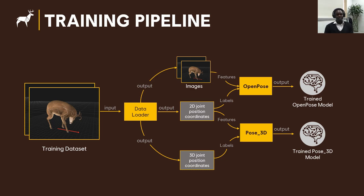Because OpenPose operates only on single images, it does not take into account the temporal information or features that might be present in videos. To exploit those temporal features, we retrained a 3D pose estimation model based on LSTM called Pose3D, which takes as input a sequence of 2D coordinates from five consecutive frames and from which it extracts temporal features to infer the corresponding sequence of 3D coordinates.